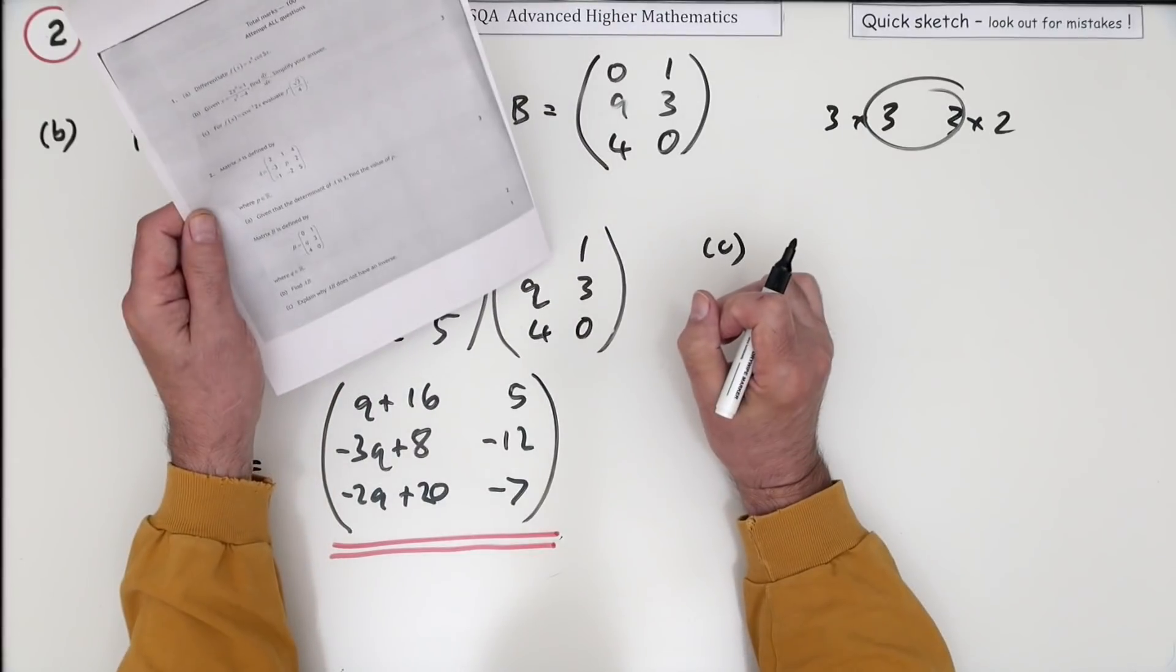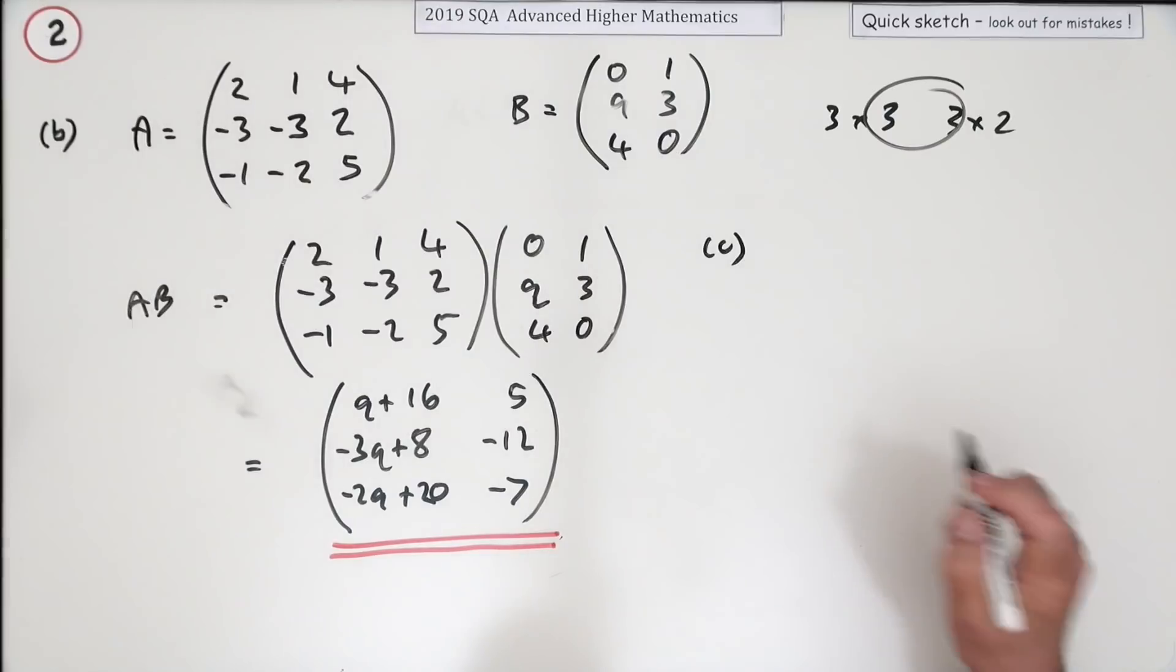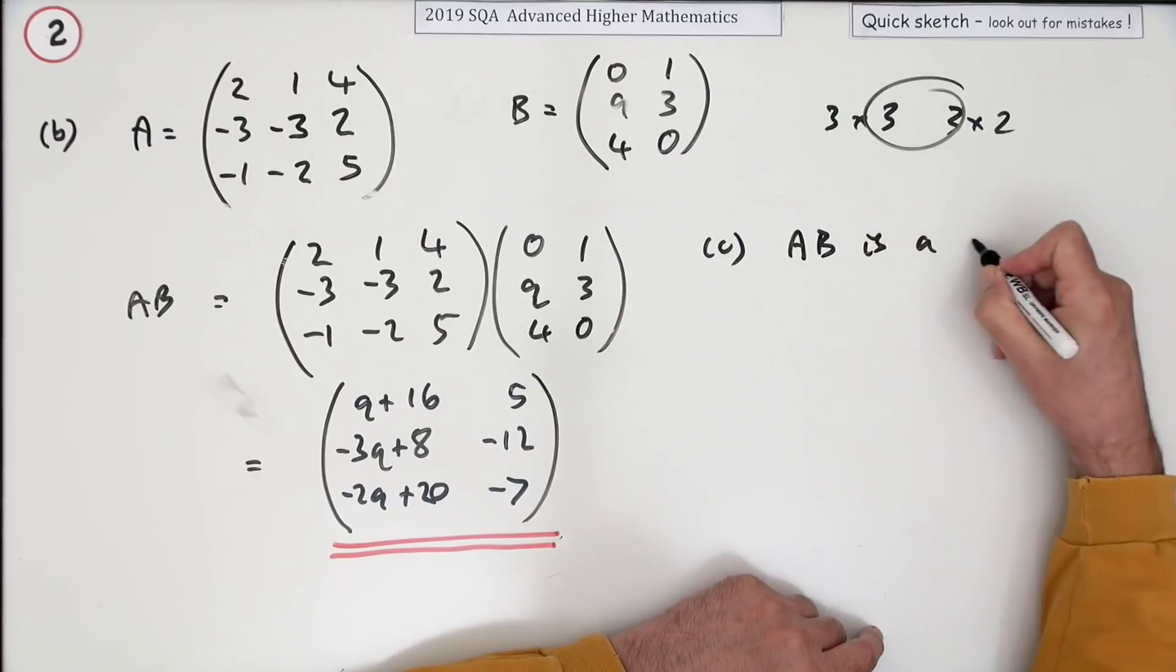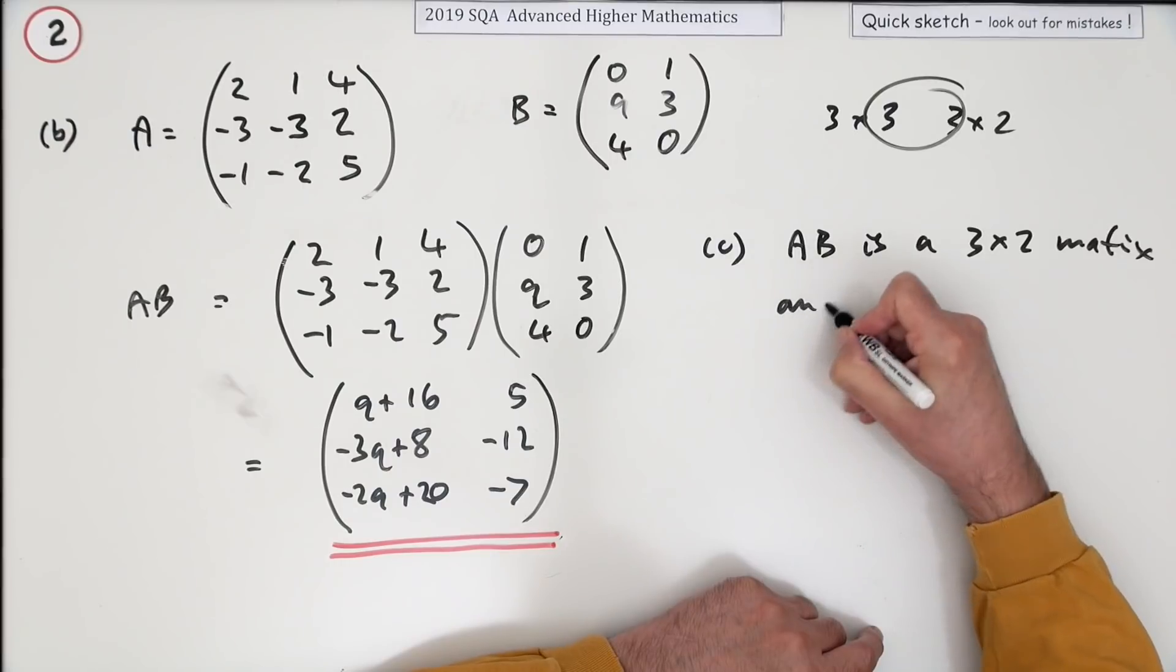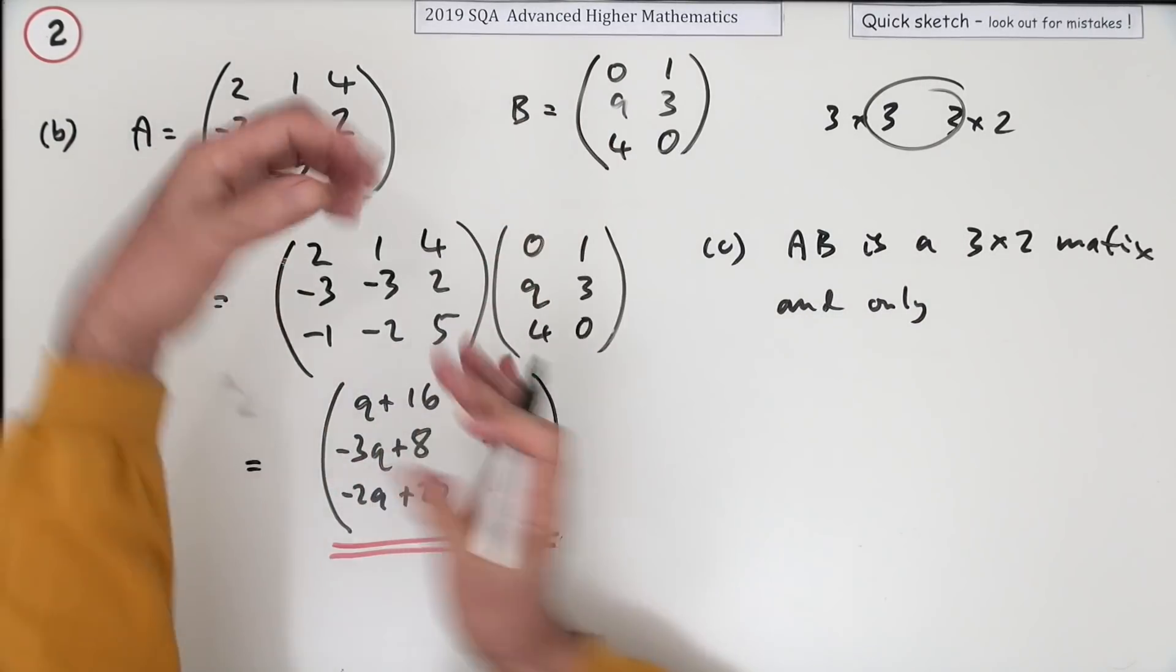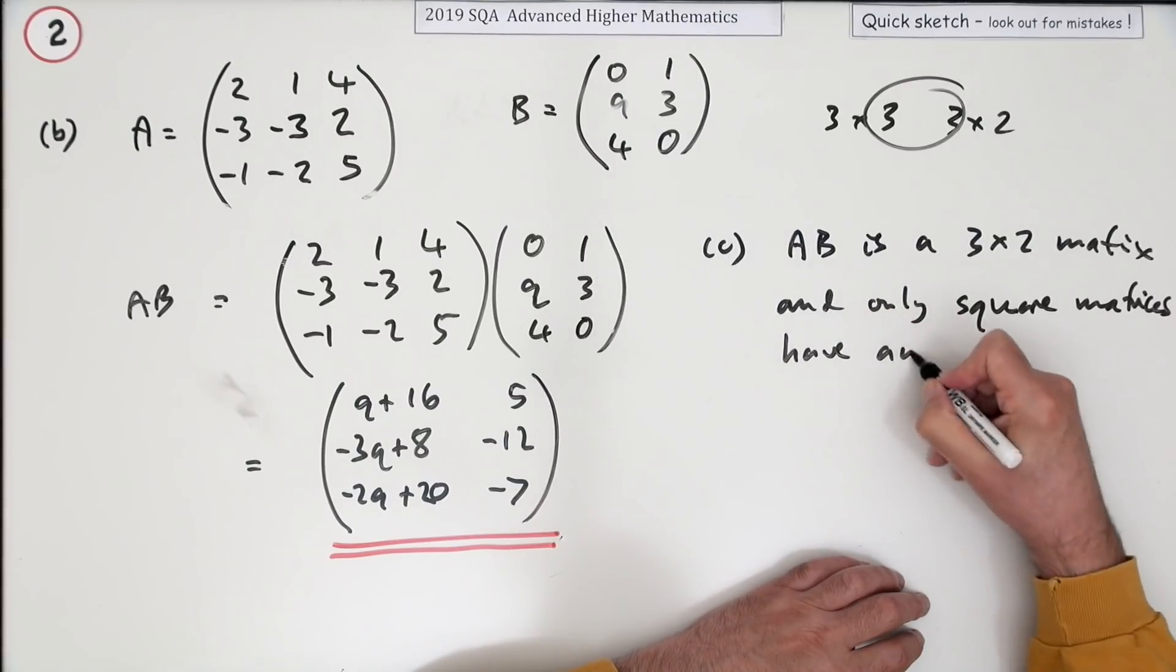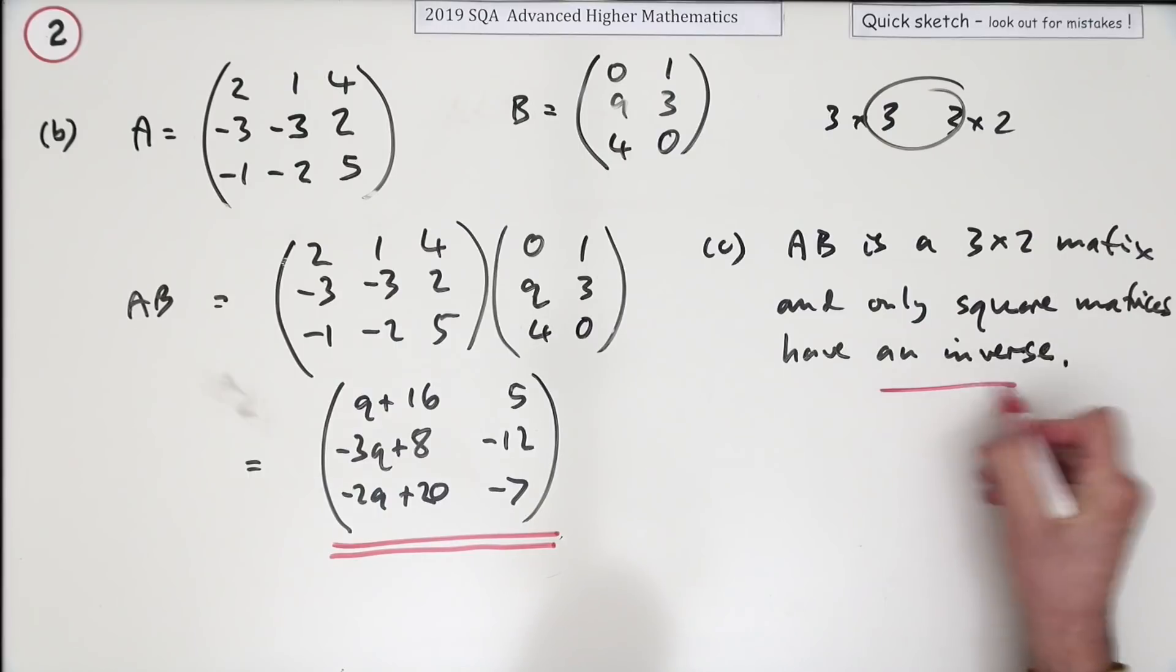Now, part C. There's only one mark for this. Explain why AB does not have an inverse. Well, AB is a three by two matrix, and it has to be a square matrix to have an inverse. Only square matrices have an inverse. Or maybe you should just have said AB is not a square matrix. There we go.